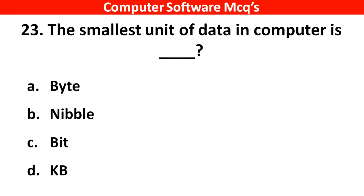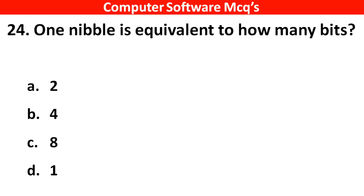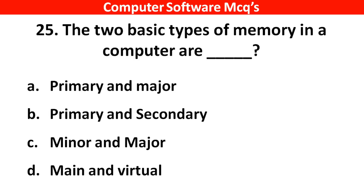The smallest unit of data in a computer is? Right answer is option C: Bit. Next question: One nibble is equivalent to how many bits? Right answer is option B: 4. Next question: The two basic types of memory in a computer are? Right answer is option B: Primary and secondary. Thank you.